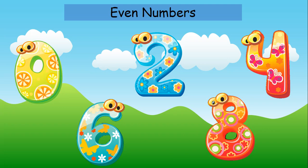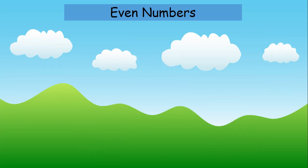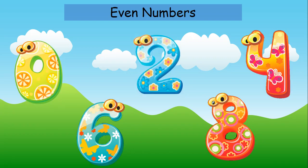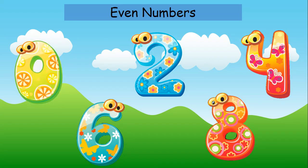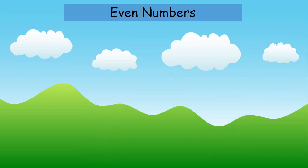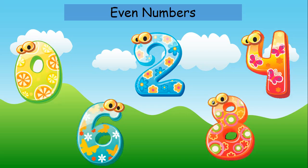This is the bingo song. Let's sing once again. They are numbers we should know and they are called the even. 0, 2, 4, 6, 8. 0, 2, 4, 6, 8. 0, 2, 4, 6, 8. And these numbers are the even. Now you know the even numbers.